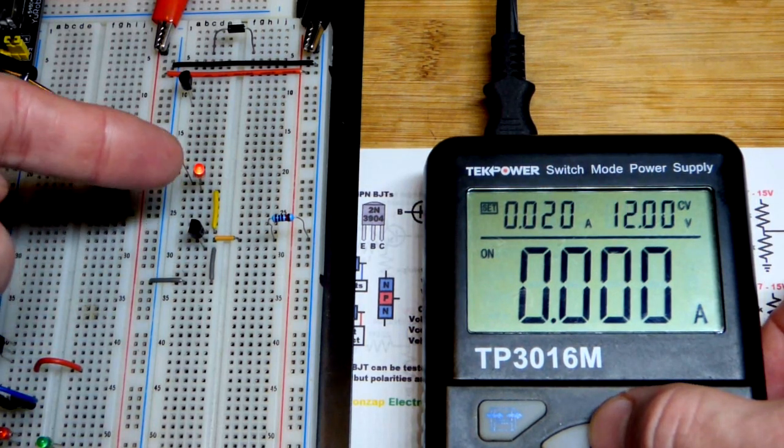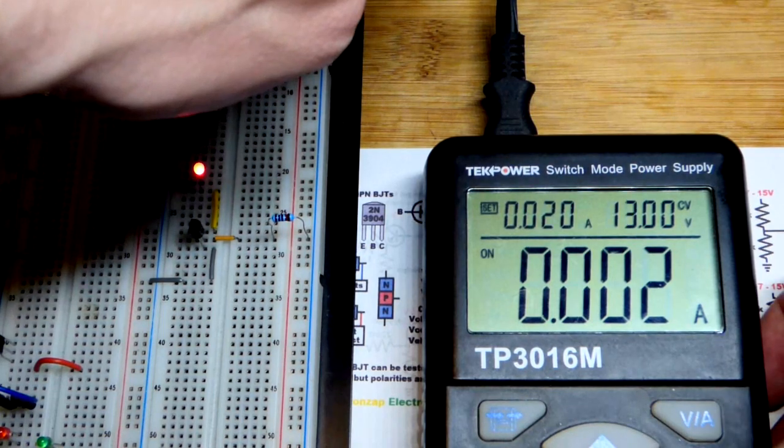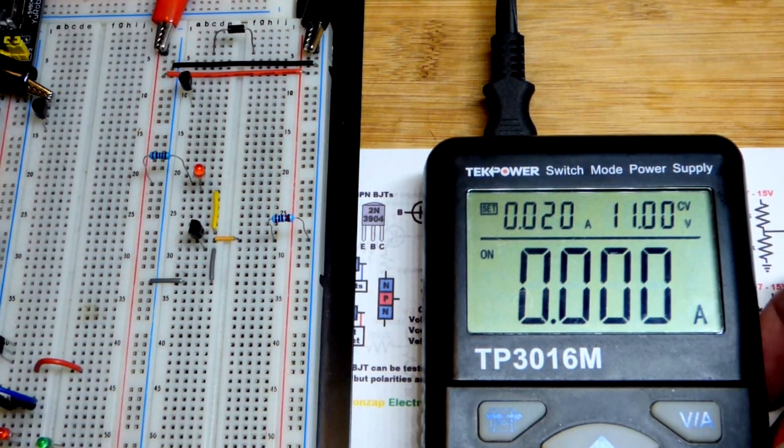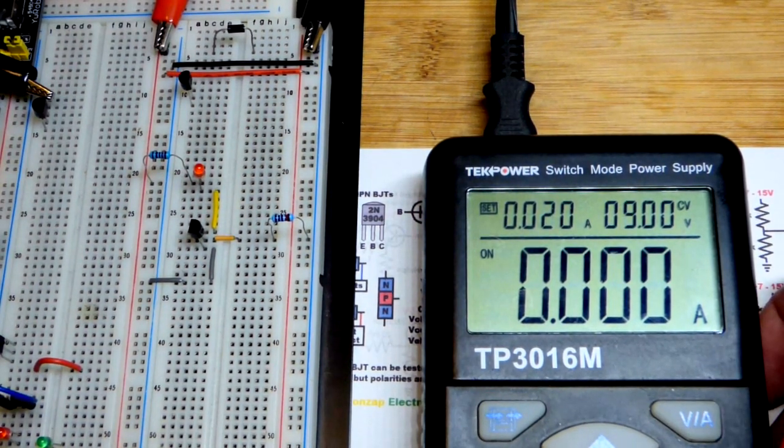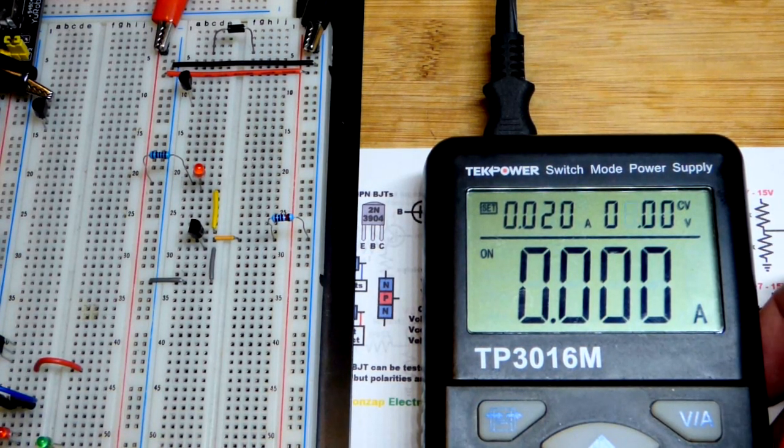But we're going to exceed that. You can see the LED is starting to glow right now. I'll kind of shade it right there. It's glowing quite a bit. So, we have that emitter-to-base breakdown. It's starting to conduct.